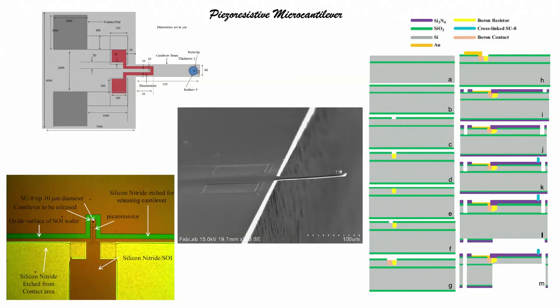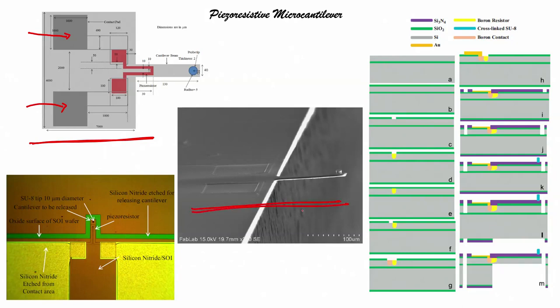On screen we see a piezo-resistive micro-cantilever schematic diagram. The probe tip thickness and radius are labeled, along with the cantilever beam and piezo-resistor with their dimensions. There is also a contact pad through which we will measure the resistance. Another view shows the piezo-resistive cantilever completely released, with a piezo-resistor embedded onto it.